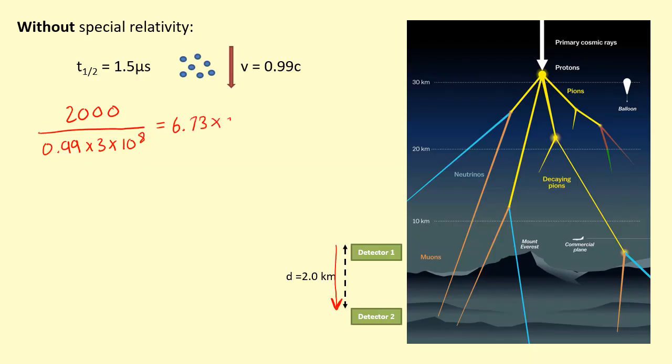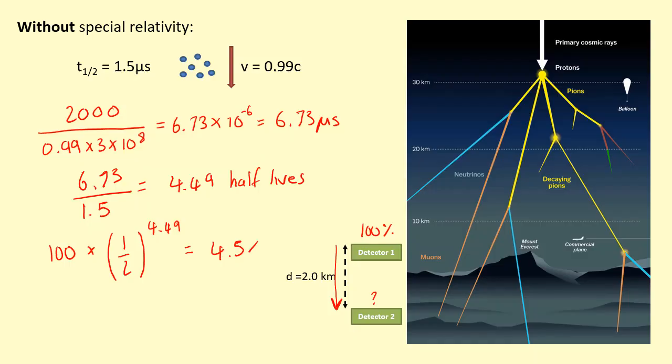So how many half-lives are in 6.73 microseconds? If we take 6.73 divided by the half-life which we measured in the lab, we get approximately 4.49 half-lives. Okay, so if we have 100% at detector one, how much is left over at detector two? So if we do 100 times by half to the power of the number of half-lives, so 4.49, we're basically multiplying by half 4.49 times. This gives us 4.5 percent, which isn't that much. So we expect that most of the muons from the first detector don't make it to the second detector. It turns out this isn't what happens.